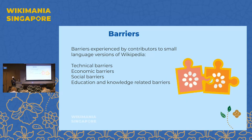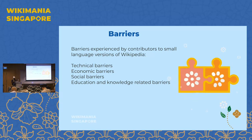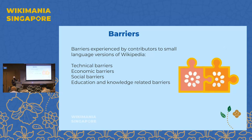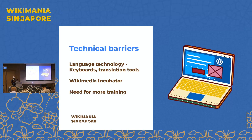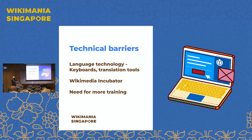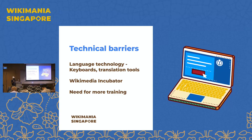Now let's talk about the barriers. When we talk about the barriers, we're looking at technical barriers, economic barriers, social, and education and knowledge-related barriers. For technical barriers, we're looking at what are some of the technical challenges they face in terms of language. We know when we talk about language, most of them would have different keyboards, or maybe they have special characters that are not currently supported in the Wikimedia ecosystem, or if they do, how do they easily navigate through these keyboards.